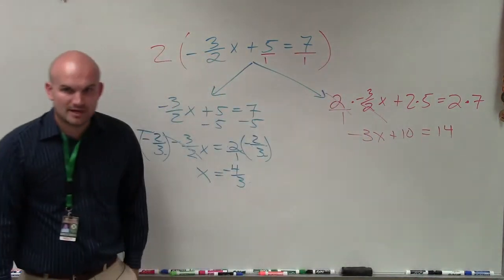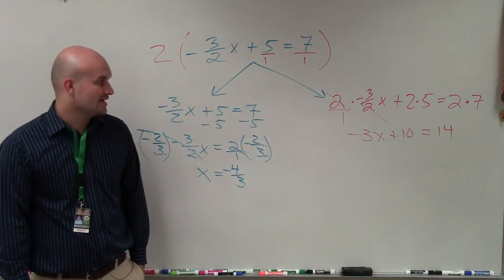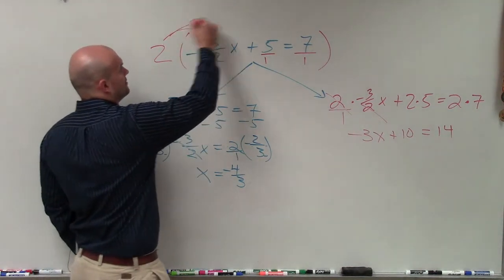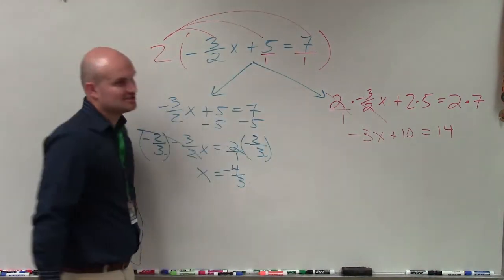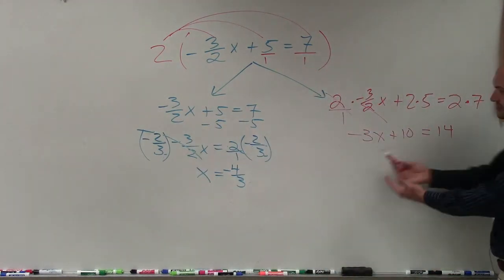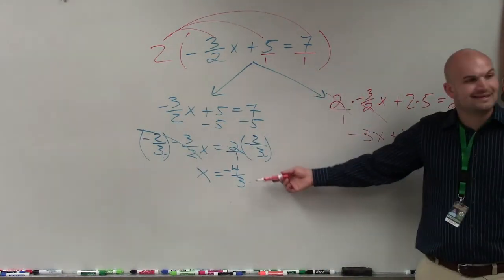I have -3x plus 10 equals 14. Can you guys solve from there? Can you guys solve that 2-step from there? I would solve it, but I mean, I already solved the equation. But when you solve that, subtract 10 on both sides, divide by -3, you get the exact same answer.